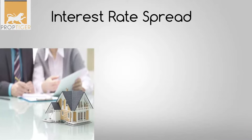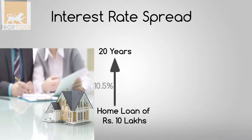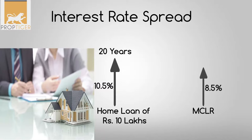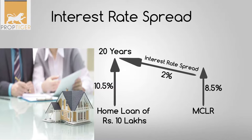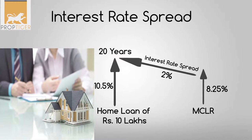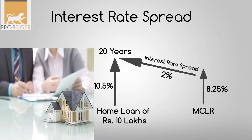For example, if you take a home loan of Rs. 10 lakh for 20 years at the rate of 10.5%, and the MCLR at a particular point of time is 8.5%, the interest rate spread on the loan is 2%. Later, if the bank revises its MCLR to 8.25% but the interest rate on your loan remains unchanged at 10.5%, it implies that the bank has increased its profit margin by tweaking its spread to 2.25%.